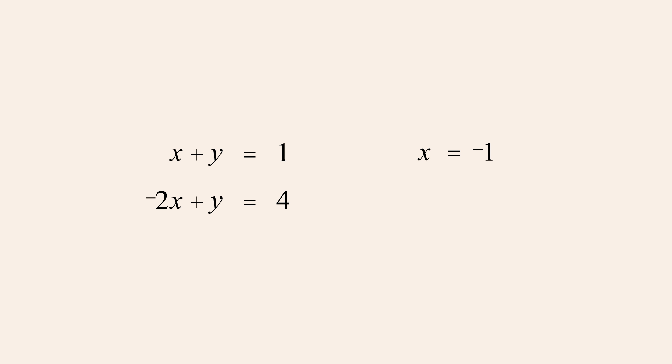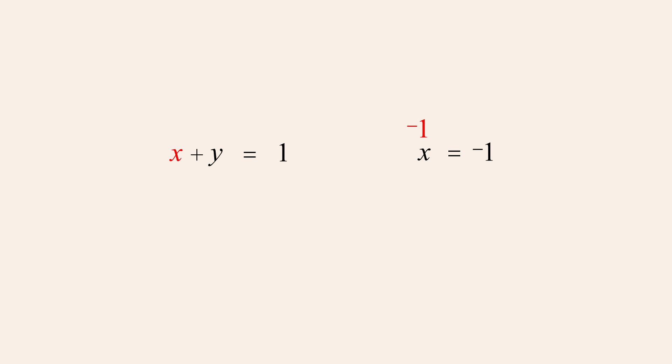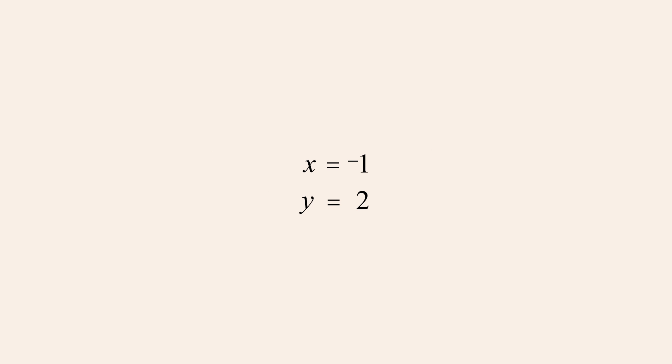Since in this example the top equation is the simplest, we will use it to find the value of y. Substituting negative one for x in the top equation, we can solve for y by adding one to both sides, giving us y equals two. So the values of the variables which are the solution for this system are x equals negative one and y equals two. This solution can also be represented as the ordered pair negative one, two.